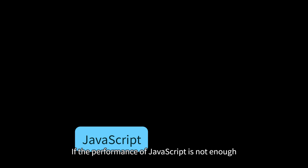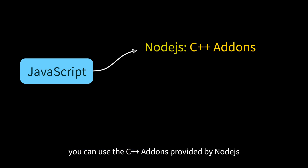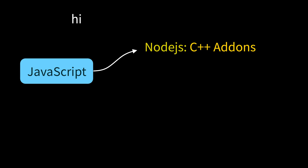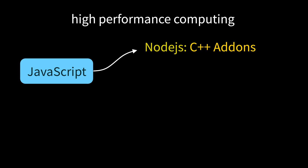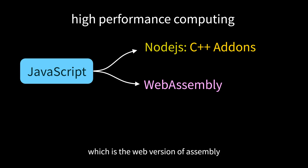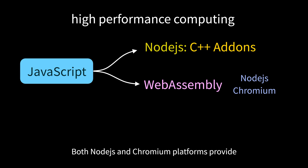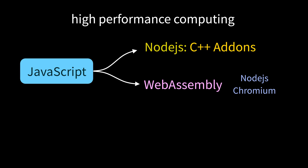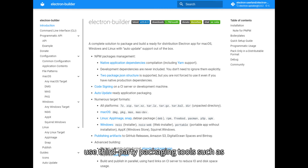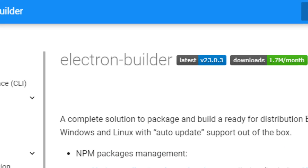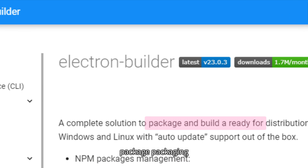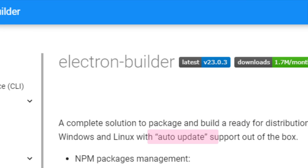If the performance of JavaScript is not enough, you can use the C++ addons provided by Node.js to meet the needs of high-performance computing in the form of plugins. Of course, you can also use WebAssembly, which is a web version of assembly. Both Node.js and Chromium platforms provide WebAssembly functionality internally. We can mix programming. In addition, using third-party packaging tools such as Electron Builder, you can build and package Electron with automatic update functionality.